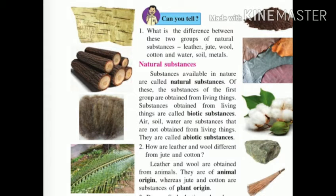Natural substances are those which are available in nature. They can be biotic and abiotic. Biotic substances are obtained from living things. Abiotic substances are obtained from non-living things like air, soil, and water.